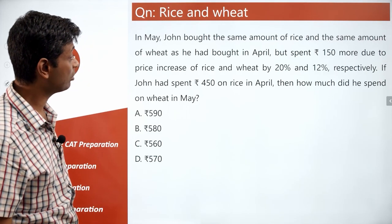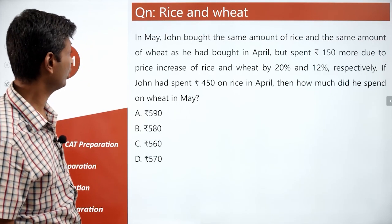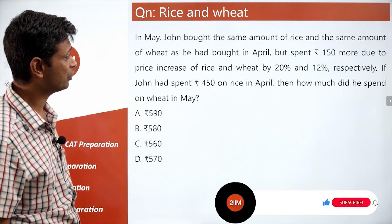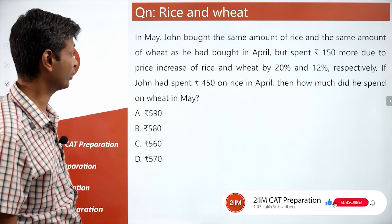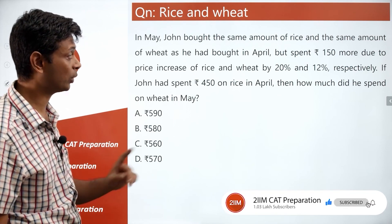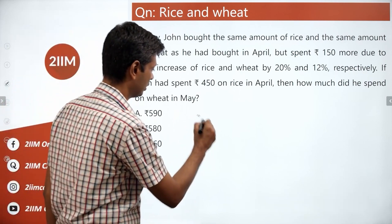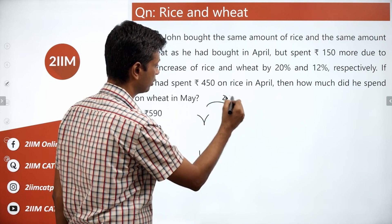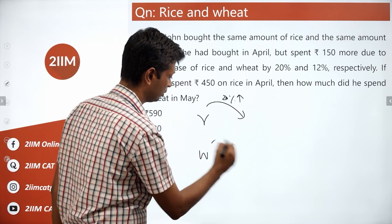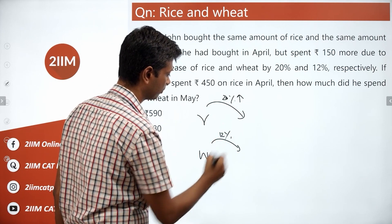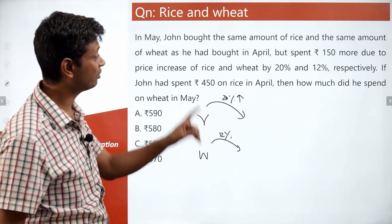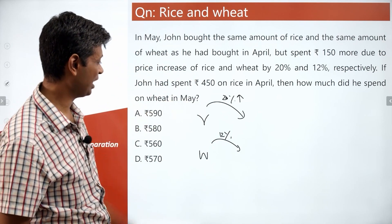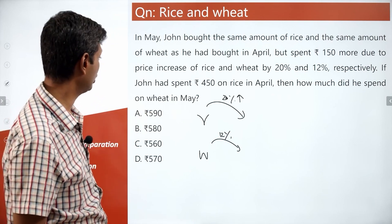In May, John bought the same amount of rice and the same amount of wheat as he had bought in April, but spent Rs. 150 more due to the price increase of rice and wheat by 20% and 12% respectively. Rice is up 20%, wheat is up 12%, and he ended up spending 150 more. If John had spent 450 on rice in April, then how much did he spend on wheat in May?